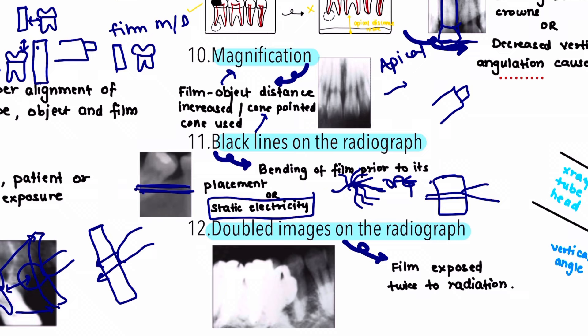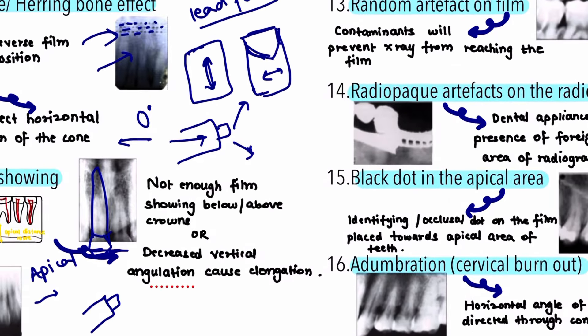The next error is a doubled image on the radiograph, caused by the film being exposed twice to radiation. The preventive measure is that after exposure, the film should be marked and stored properly in a container 8 to 10 feet away from the x-ray tube to avoid exposure by scattered radiation.